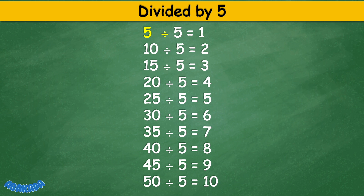Divided by 5: 5 divided by 5 equals 1, 10 divided by 5 equals 2, 15 divided by 5 equals 3, 20 divided by 5 equals 4, 25 divided by 5 equals 5, 30 divided by 5 equals 6, 35 divided by 5 equals 7, 40 divided by 5 equals 8, 45 divided by 5 equals 9, 50 divided by 5 equals 10.